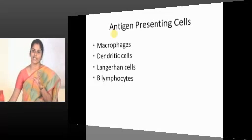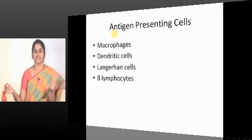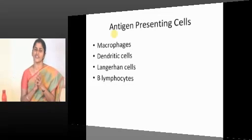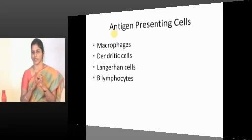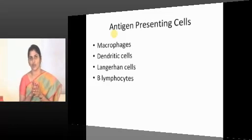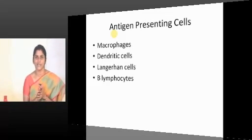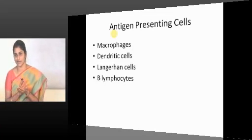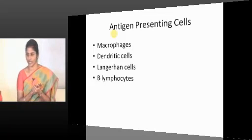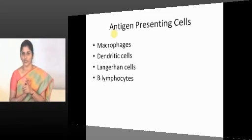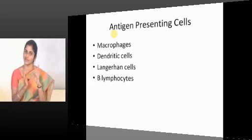Toll-like receptors. The family is really expanding, with different numbers, each taking care of some subset of organisms. The high yield area — the most common question is the Toll-like receptor for gram-negative organisms: lipopolysaccharide of gram-negative organisms. It is Toll-like receptor 4. That covers antigen presenting cells.